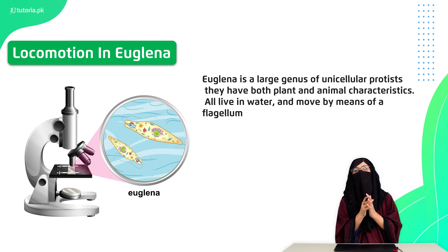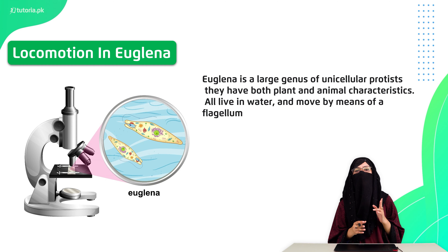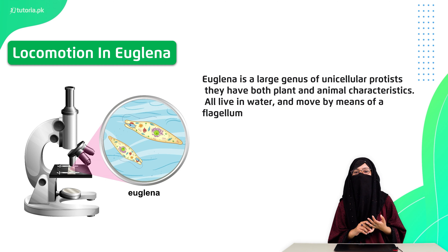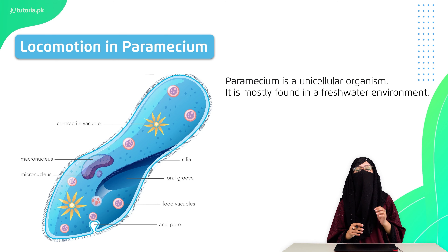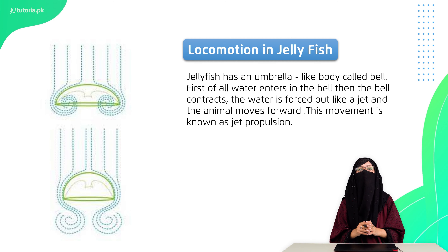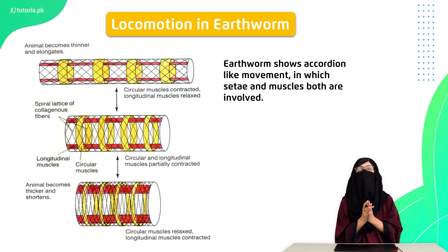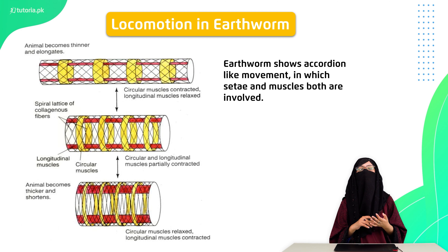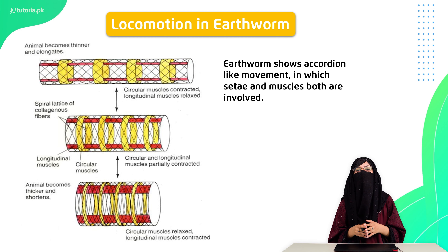Then we talk about locomotion. The skeleton's support plays a very important role in locomotion. For Euglena, two organs help in locomotion: first is the flagellum, which creates a whip-like motion, and second are contractile myonemes, which help Euglena through contraction and relaxation. Then if we talk about Paramecium, its body has several hundred cilia which help it move from one place to another. Then jellyfish — jet propulsion is the reason that jellyfish can move from one place to another.